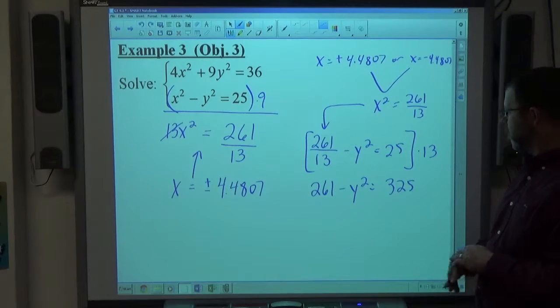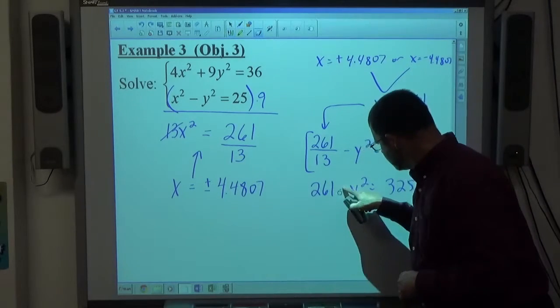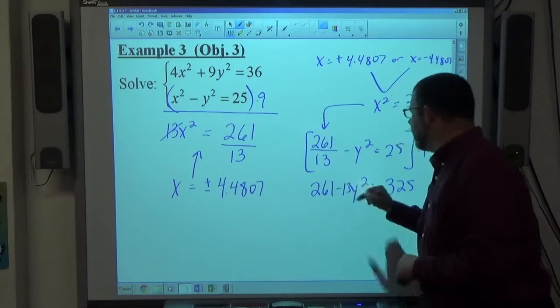So 261 minus 13y squared equals 325. Oh yeah, 13y squared, thank you. I was so worried about multiplying 25 times 13, I forgot about that.